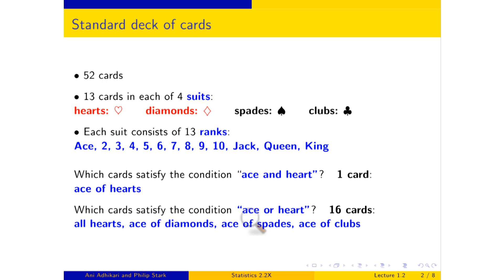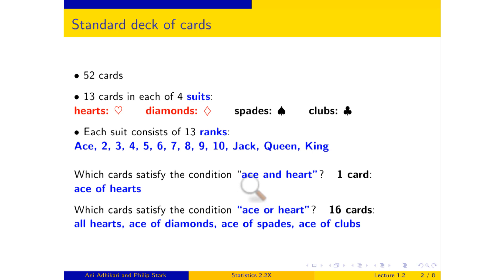Whereas if you're easy-going and will accept a card that's an ace or a card that's a heart — either or, it doesn't matter — then you've got lots of cards going for you. If I were to accept an ace or a heart or a diamond, not only would those 16 cards work, there would be another 12 — the 12 diamonds that are left — giving 28 cards satisfying my conditions. So when you look at events of the form 'this OR that,' expect their chances to be in general bigger than the ingredients; and for 'this AND that,' expect those chances to be smaller.